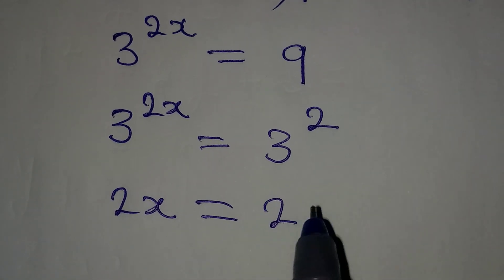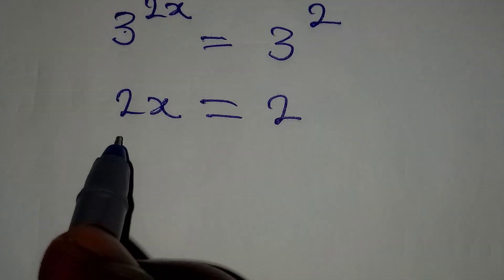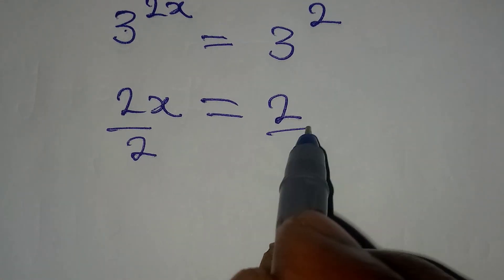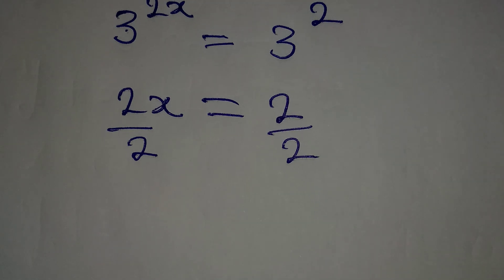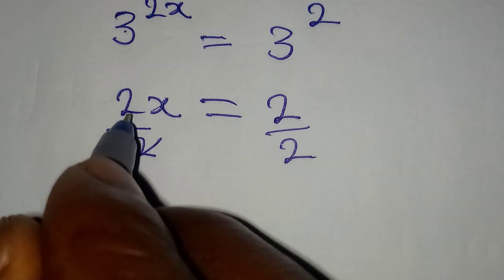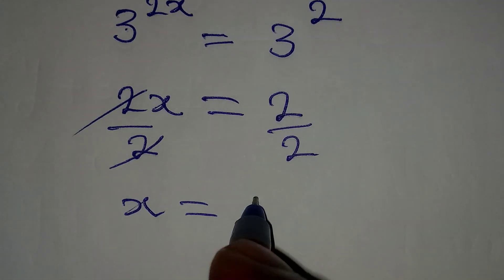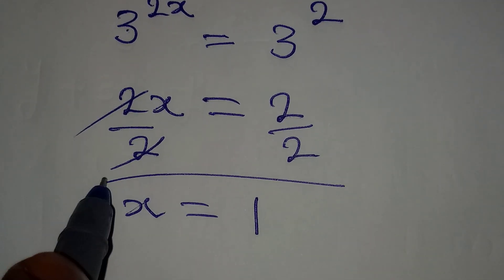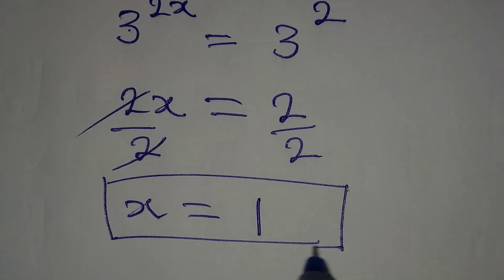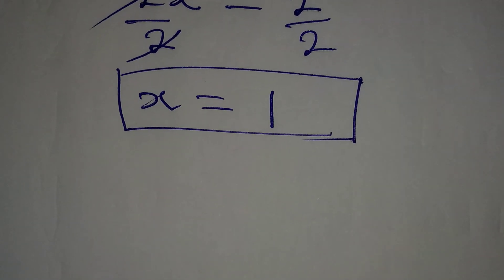Because this and this are equal, then we can divide by 2 on both sides. If we do that, this will go with this and x is equal to 2 over 2, which is 1. This is the value of x that satisfies the equation.